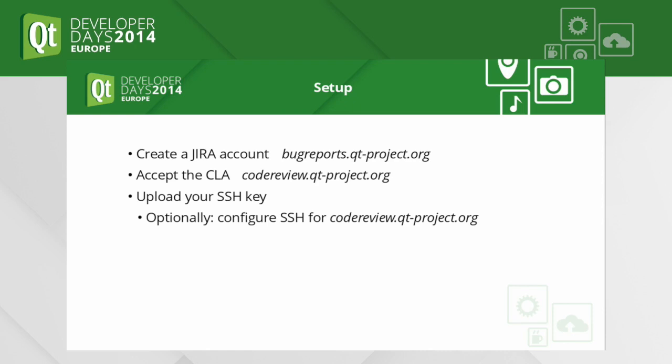Using the same credentials you get on bugreports, you then go to the code review website at codereview.qtproject.org and accept the CLA. I'll explain what the CLA is in a moment. On that website you can also upload your SSH key, which is needed for pushing stuff using Git. Optionally you can configure SSH, but that's just an optional step. I'm going to publish these slides so don't worry about taking notes.